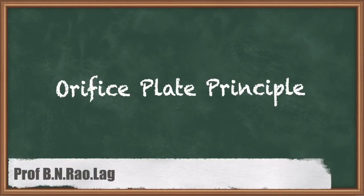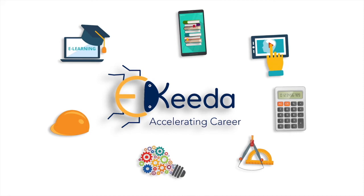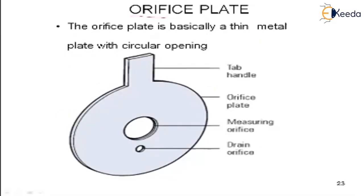In this session we are going for the next parameter in the measurement of flow, that is called orifice plate. The orifice plate is basically a thin metal plate with a circular opening. This is the measuring orifice, and this is a tab handle for handling it.